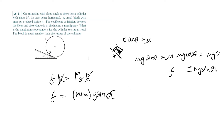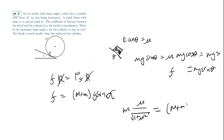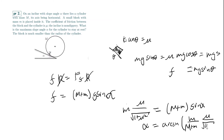Setting the forces equal and substituting θ = arctan μ, so sin θ = μ / √(1 + μ²), we get: m · μ / √(1 + μ²) = (M + m) sin α. Therefore, α = arcsin[ m·μ / ((M + m)·√(1 + μ²)) ]. That's the answer for problem two.